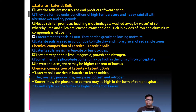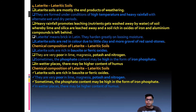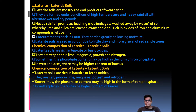Laterite soils are the end product of weathering. They are formed under conditions where the temperature is very high and there is heavy rainfall, with alternating wet and dry seasons. Heavy rainfall promotes leaching, a process where all the nutrients are washed down into the water. The lime and silica are leached away.